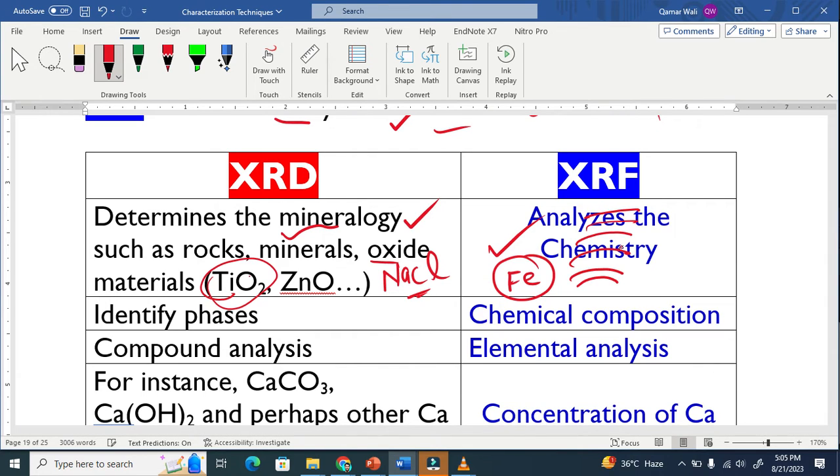XRD basically identifies phases. Phases I explained many times. This is one phase of calcium and calcium hydroxide is another. This is basically a phase you see here.